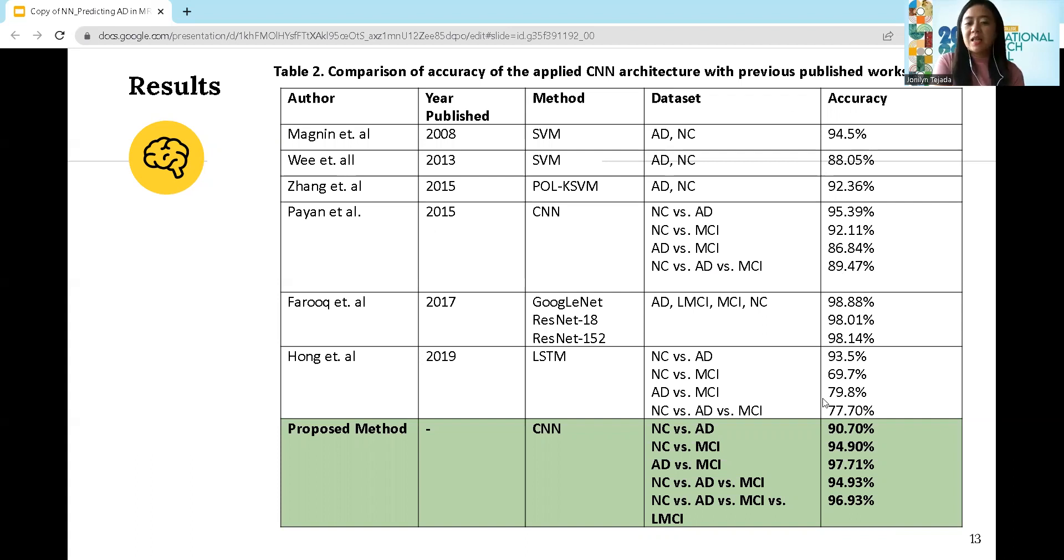For this study, I used CNN with Modified VGG Architecture. I got 96.93% for four-way classification, and these are the results for three-way and two-way classification.